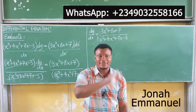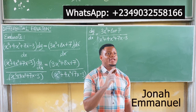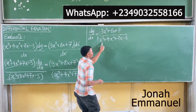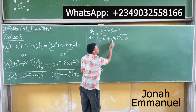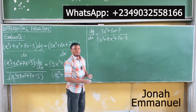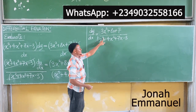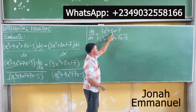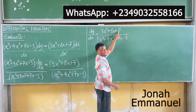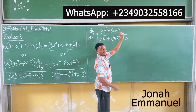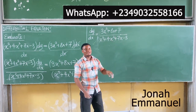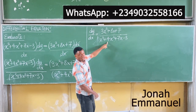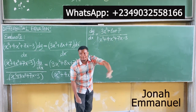Here's the thing: if you know the different methods of doing integration, you will know that if you differentiate the denominator, you get the numerator. If I differentiate x cubed plus 4x squared plus 7x minus 3, I get 3x squared plus 8x plus 7. So the method to use here is substitution.